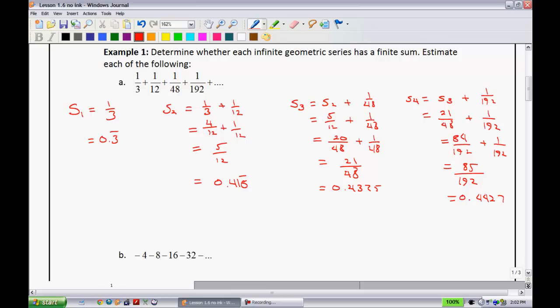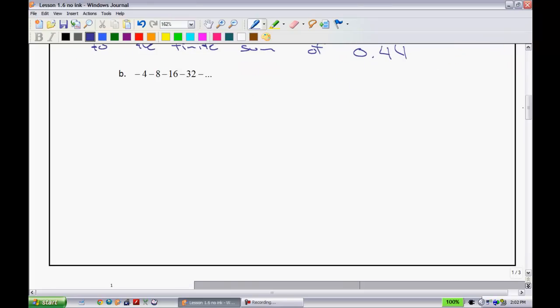If you look, these numbers all seem to be converging. What we can say about these is, these partial sums appear to get closer to the finite sum of approximately, not exactly, but I'd say 0.44.